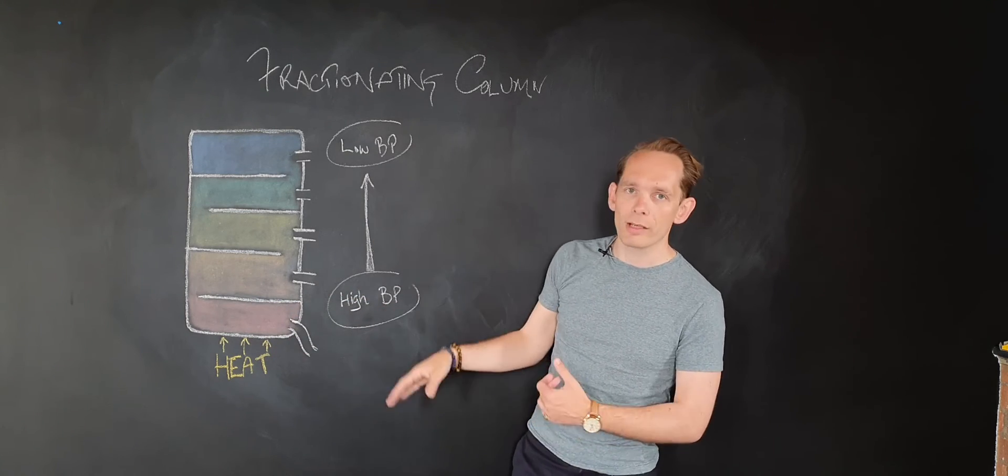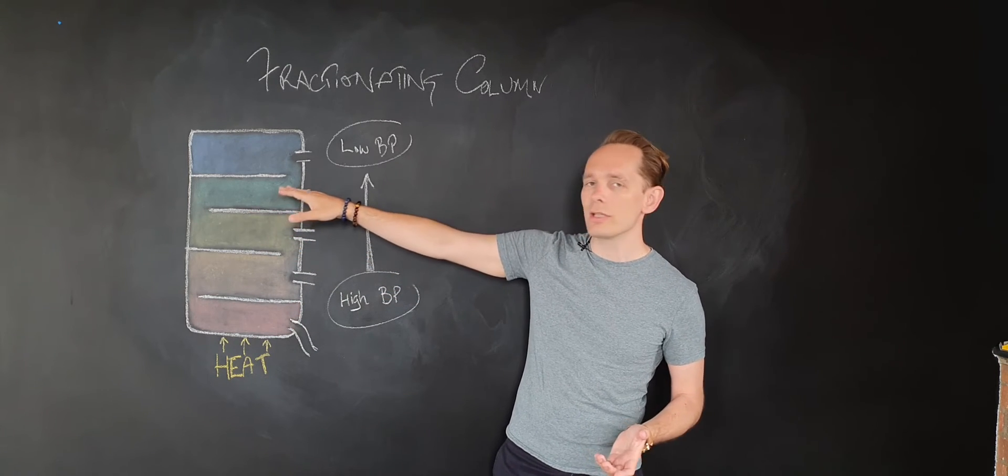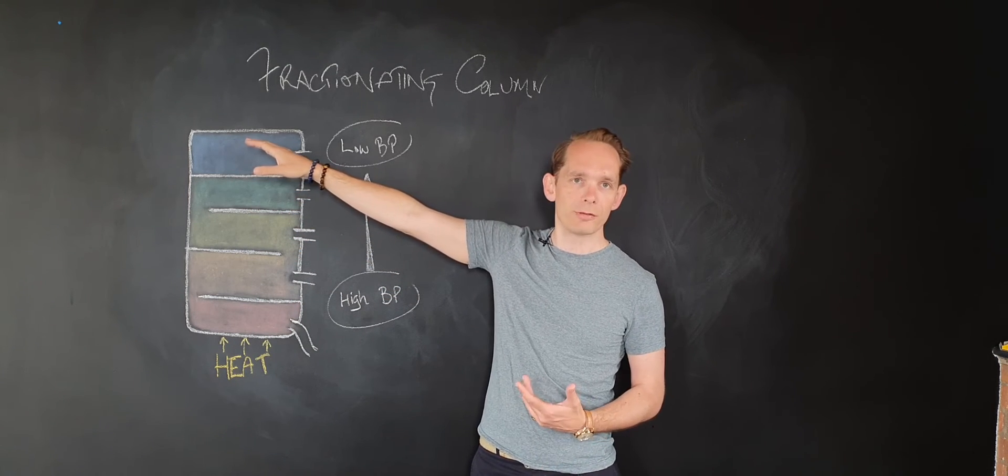Compounds with a low boiling point, that are naturally gases for example, will travel all the way up and they don't yet reach a point where they condense because it's still warm enough for them to remain as gases.